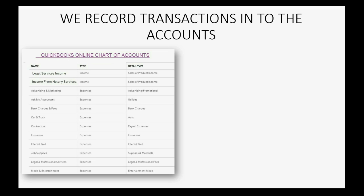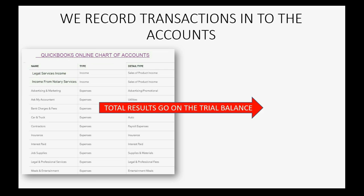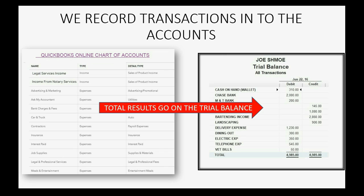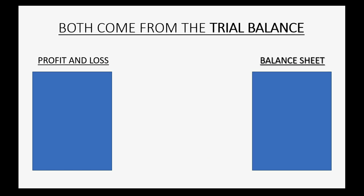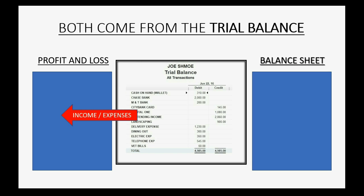What we will do when we record our home finance transactions is record the transactions directly into the accounts that we are using. Then QuickBooks Online will take the total results of each account and put the summarized numbers onto the Trial Balance. Once the totals have been listed on the Trial Balance, we can take some of the numbers and put them on the Profit and Loss to see how well we did, and take the rest of the numbers and put them on the Balance Sheet to see what our net worth is and what our assets are worth at any specific moment.